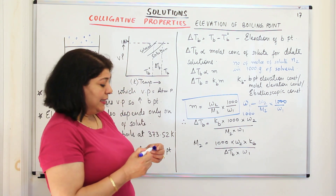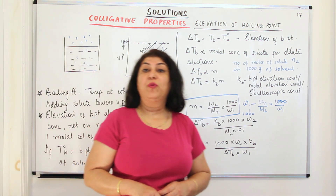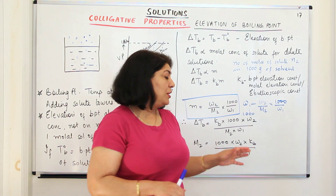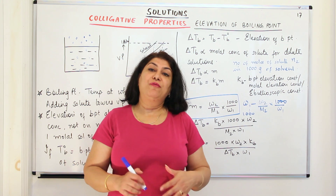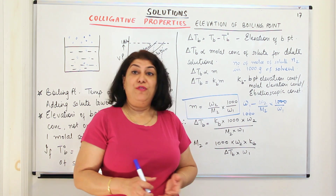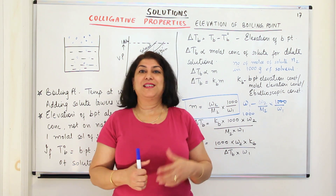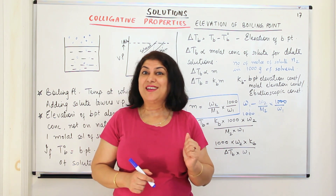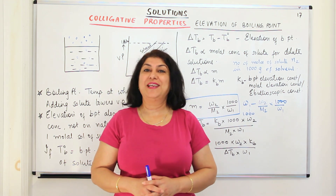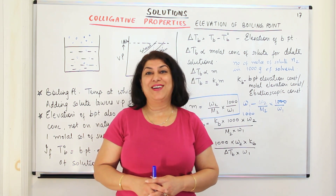This was the second colligative property: elevation of boiling point. In the next video, we will solve numerical problems based on this before moving ahead to the next colligative property. If you found this video helpful, please give it a thumbs up, subscribe to my channel, recommend it to your friends, and please keep returning for more videos in chemistry. Thank you for watching and bye-bye for now.